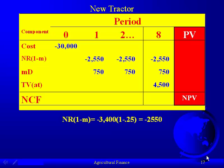Looking at our chart, the new tractor costs $30,000. The operating expenses for the new tractor, again looking back at your chart, is $3,400. To come up with the after-tax net returns, we multiply those costs by one minus the tax rate. The 25% tax rate was given and is in the table. We do the arithmetic.